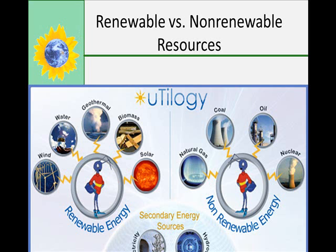Oil, natural gas, and coal are efficient energy sources because with small amounts we can produce relatively large amounts of electrical or fuel energy. They are non-renewable energy sources, which means that once they're used up they can't be replaced. Pollution is also created when oil and coal are used for energy.